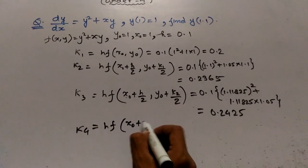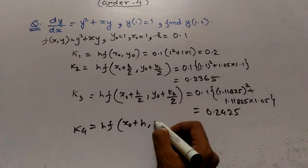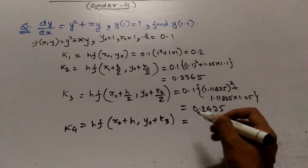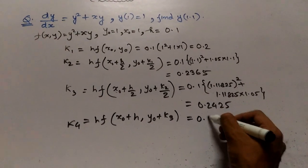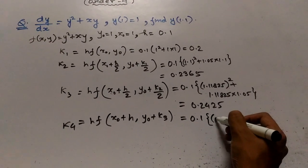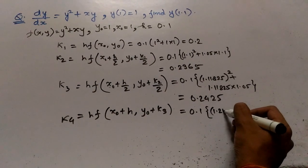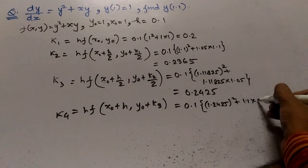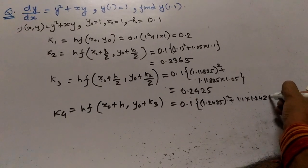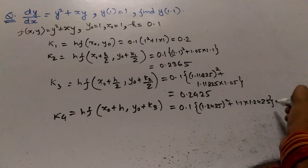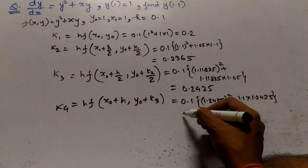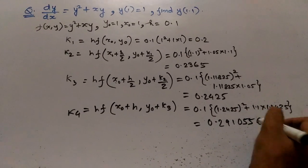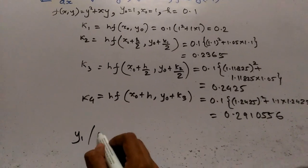Finally, k4 equals h into f(x_0 + h, y_0 + k3), which equals 0.1 into (1.2425² + 1.1 × 1.2425), giving k4 equals 0.291056.